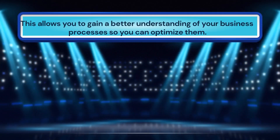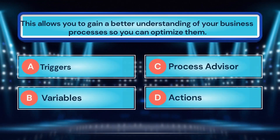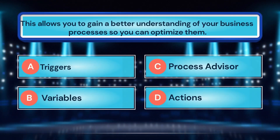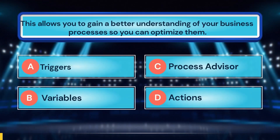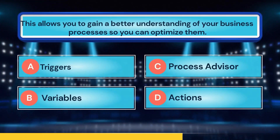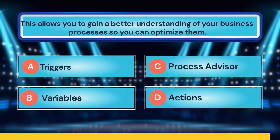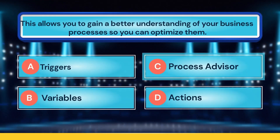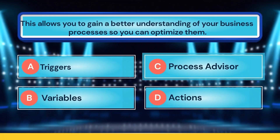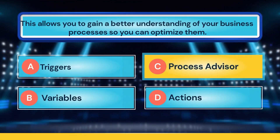This allows you to gain a better understanding of your business processes so you can optimize them. A. Triggers. B. Variables. C. Process advisor. D. Actions. Time is up! The correct answer is C, process advisor.